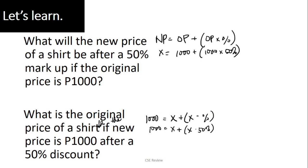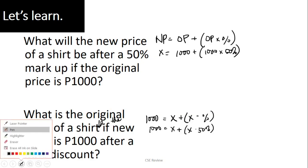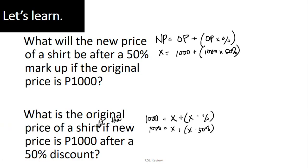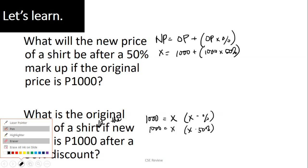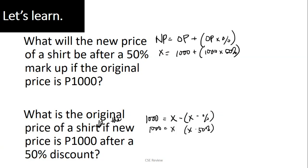Kaya lang dahil siya ay discount, 50% discount, meaning binawasan, this is not going to be plus, it's going to be minus. So again, that is the problem with the formulas. You have to know the formula and then choose kung plus or minus siya, change the formula, and then use algebra to solve this. If you want to see that, watch the first video.